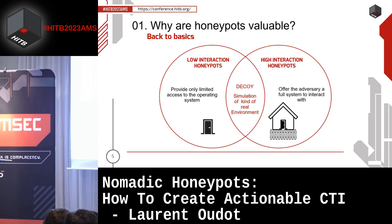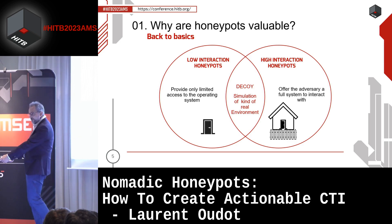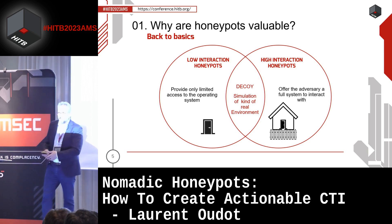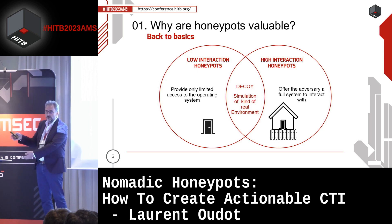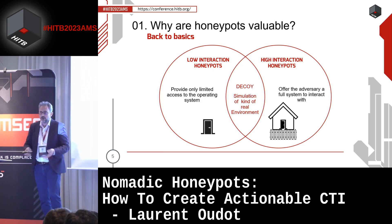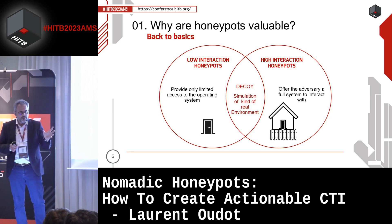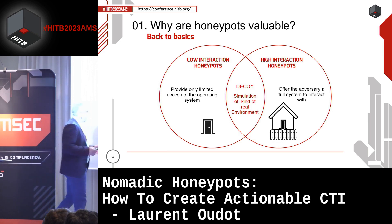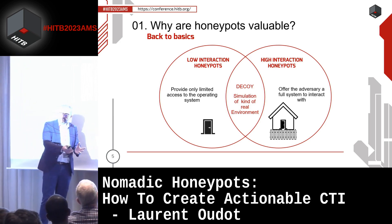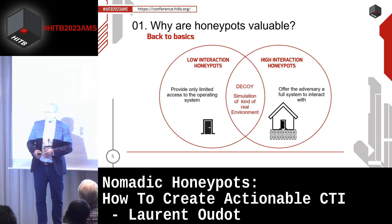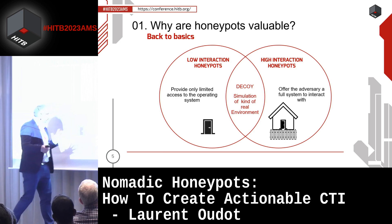A high interaction honeypot is when you sacrifice a real computer, put it on the internet, and say 'let's hack it.' It's a device on the internet that we claim is a honeypot because it's not something we use for real — it's a fake device. If someone gets in, we know it's an attack. The problem is it's dangerous because you share real interaction and the attackers may have access to many layers and could bounce somewhere else.